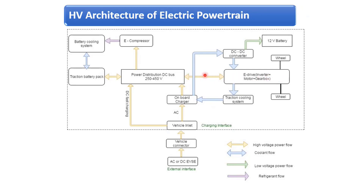The power flow between the power distribution unit and the e-drive is bidirectional. When no energy is being drawn from the DC power distribution unit, the vehicle's inertia keeps the wheels in motion. The wheels remain connected to the gearbox and motor, and this motor acts as a generator, feeding current back at a certain voltage — this is why the signal is bidirectional.